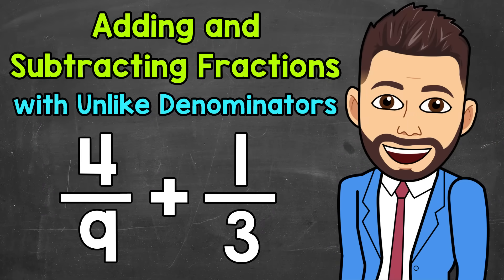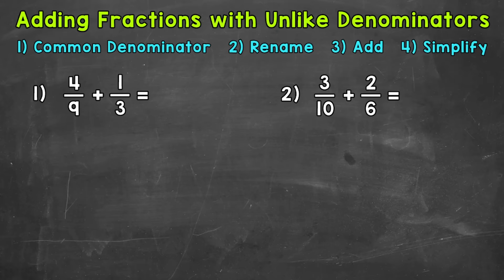Welcome to Math with Mr. J. In this video, I'm going to cover how to add and subtract fractions with unlike denominators, and we'll go through two examples each — two addition, two subtraction. So let's jump into our examples, starting with number one, where we have four ninths plus one third.